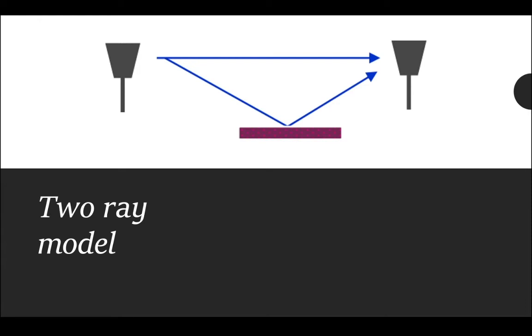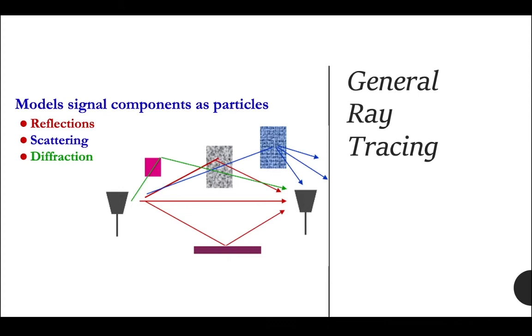The general ray tracing model consists of reflection represented by the red lines, scattering represented by the blue lines, and diffraction which is the green line. Ray tracing is close to how a signal actually propagates. There are many signals being received with so many reflections, scattering, and diffraction going on when propagating signals.